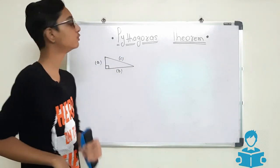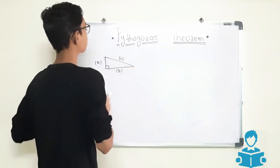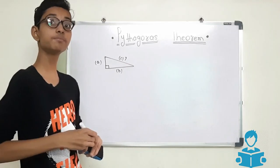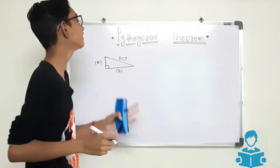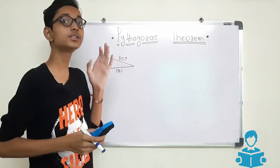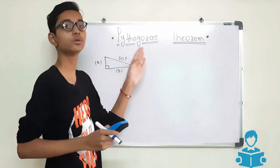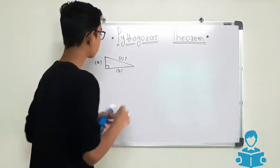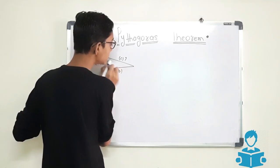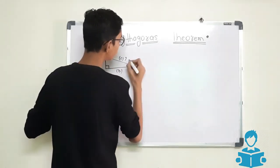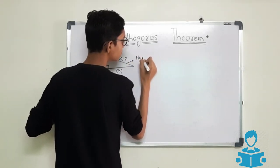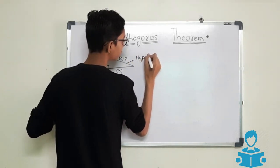How we will find the value of C? To find the value of C, the theorem used is known as Pythagoras theorem. And this line C is known as the hypotenuse.